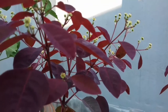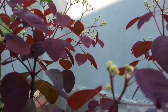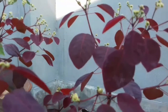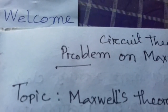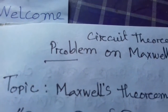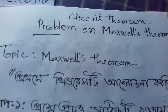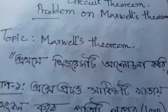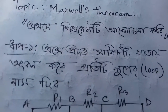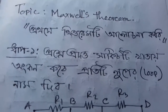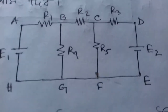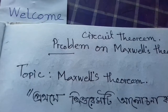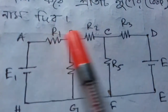First I will try to understand the theorem well. We will make the circuit, and the circuit is a loop. The loop is named, and the circuit is a loop.